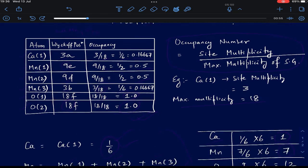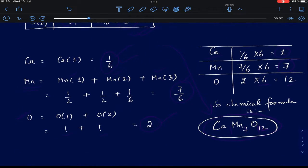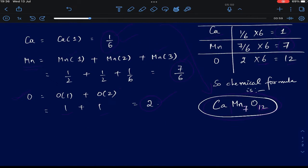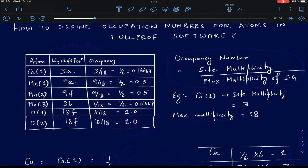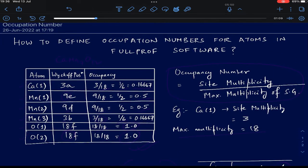To give an example of how you define the occupancy number in FullProf software, I have taken the example of a compound CaMn7O12. I have taken the details of this compound from the Crystallographic Open Database where the Wyckoff positions and the occupancies were already given, but I would like to now tell you how those occupancies are defined in FullProf.